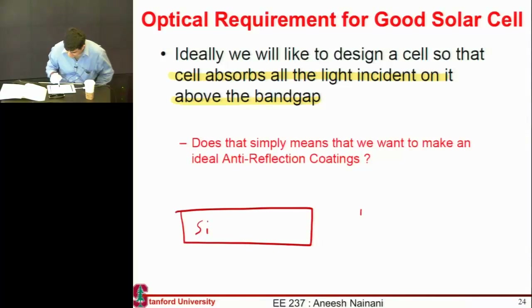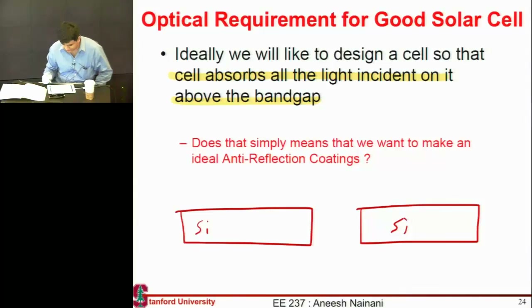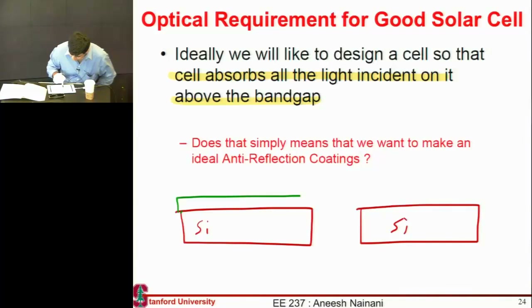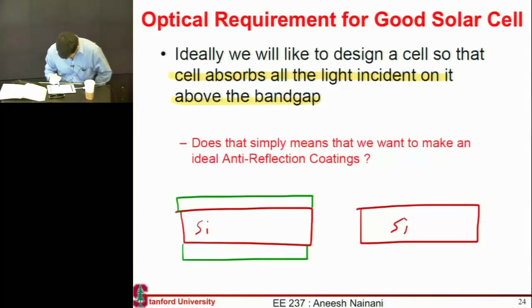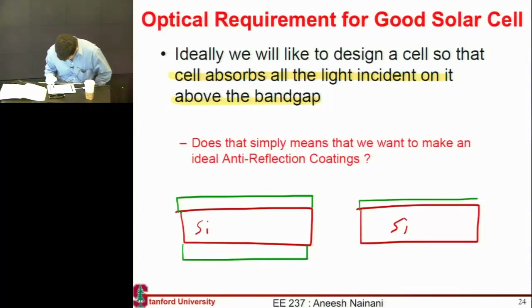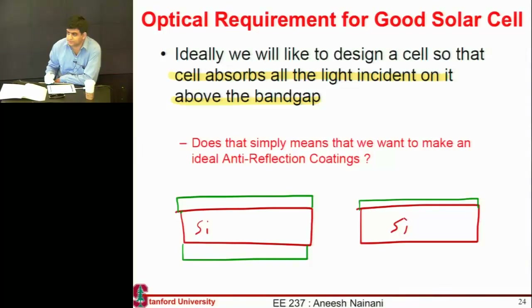Let me illustrate that by asking this question: if I have a silicon solar cell and I put an anti-reflection coating on both sides, does that make it a good solar cell? Or if I just put it on one side, would that be better? Which is the better design — anti-reflection coating on both sides, or only on one side?